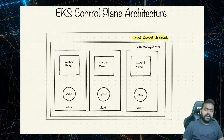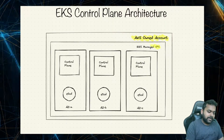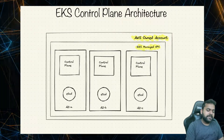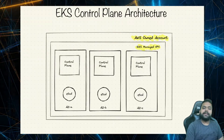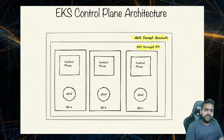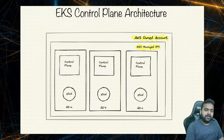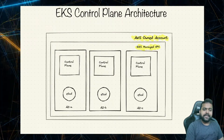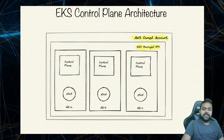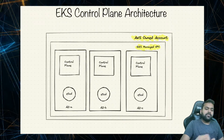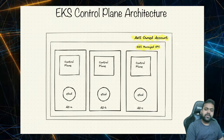Inside this AWS-owned account, they have an EKS-managed VPC. That means if you spin up your EKS cluster, it will have its own dedicated VPC, in which they will run the control plane and required components such as etcd in individual availability zones. This architecture has been done in order to provide a highly available and secure control plane.